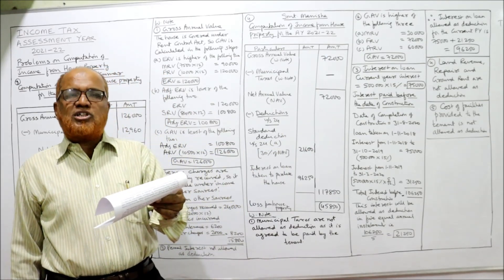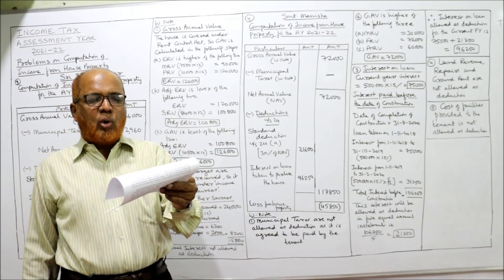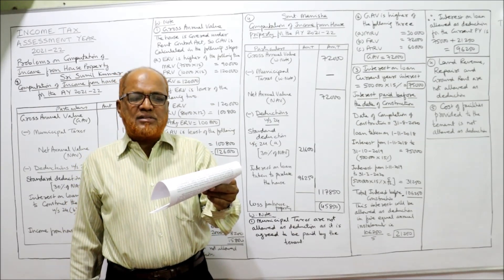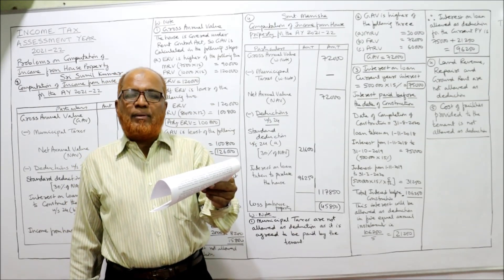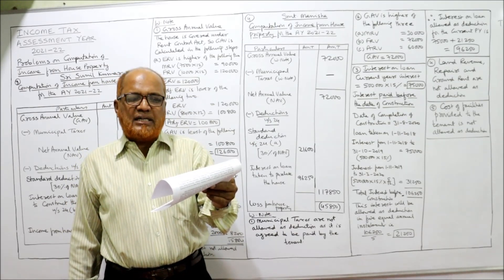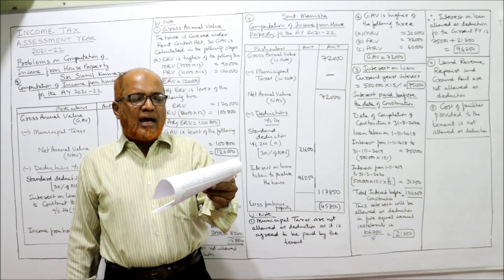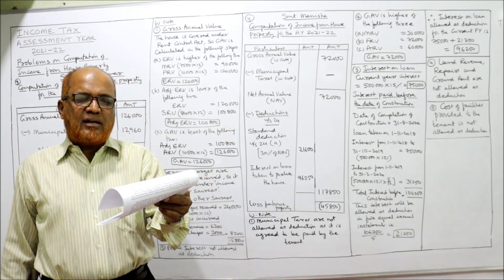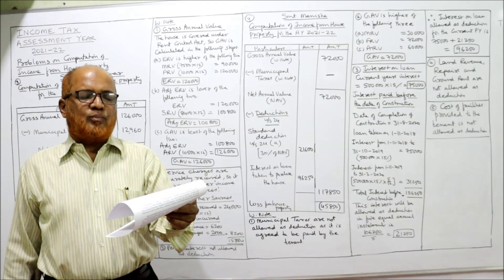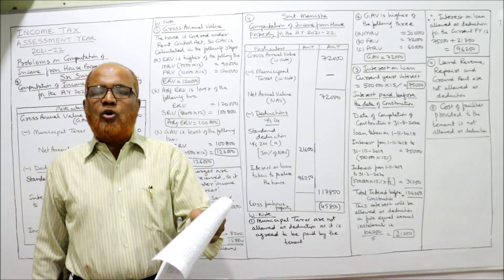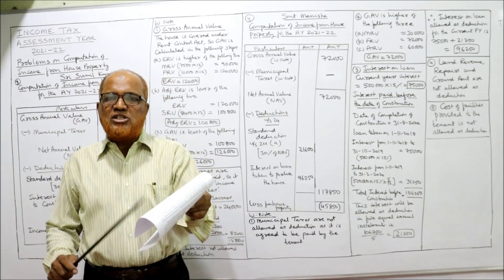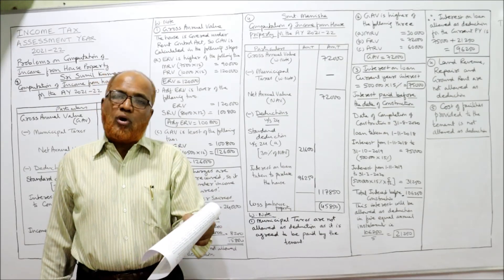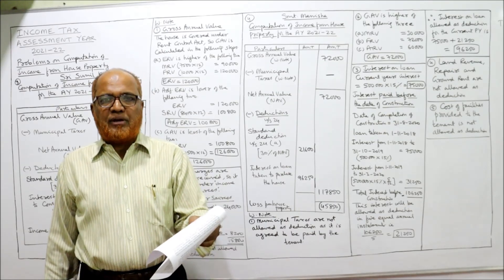The house is constructed by taking a loan of ₹5 lakh at 15% on 1st November 2018, and no principal amount is repaid so far. Interest is paid as and when it is due. The new and difficult point in this problem is regarding pre-construction period interest.